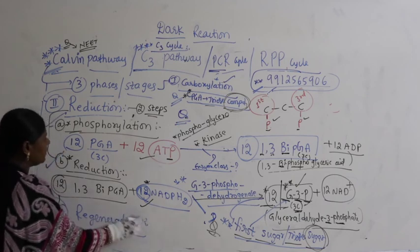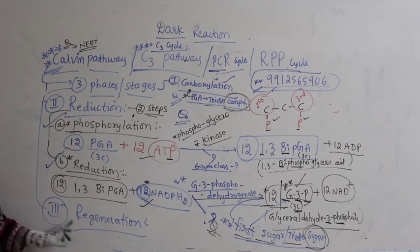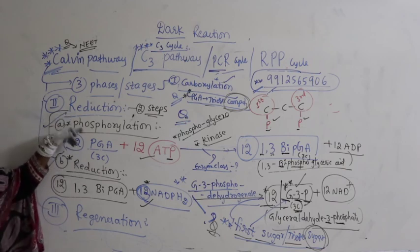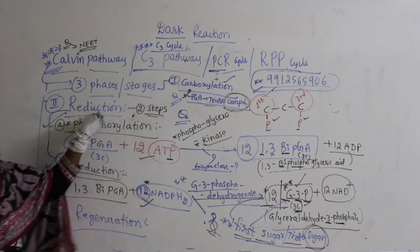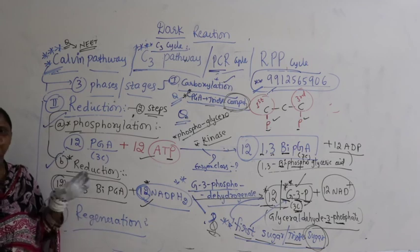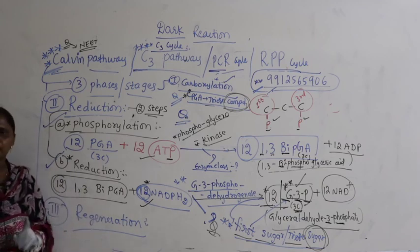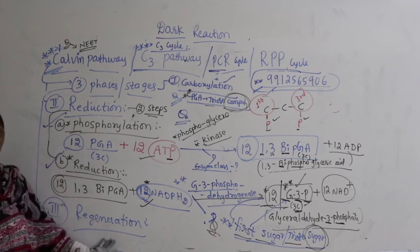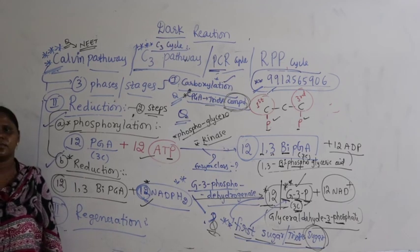We will continue with the third stage — regeneration — in the next class. For now, make sure you practice carboxylation and reduction reactions. The Calvin cycle is very, very important. Practice writing all reactions without looking and send your practice papers to the WhatsApp number provided. Regeneration will be completed in the next class.